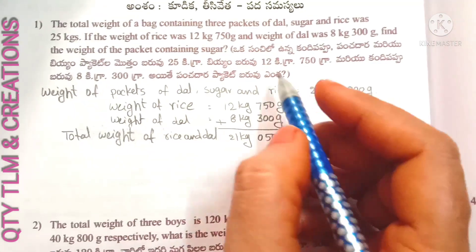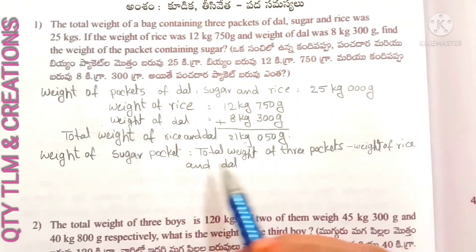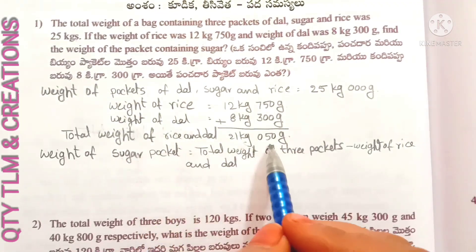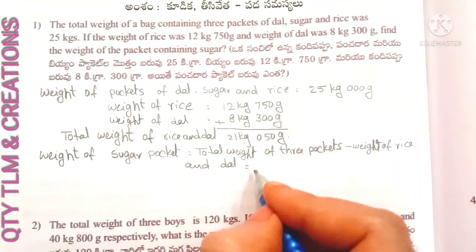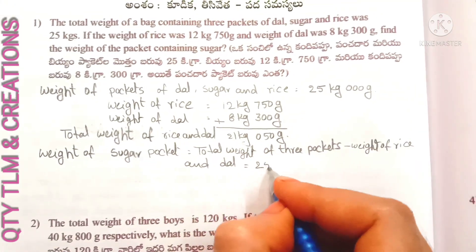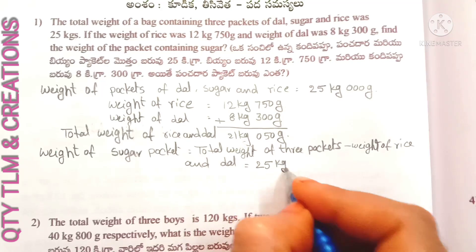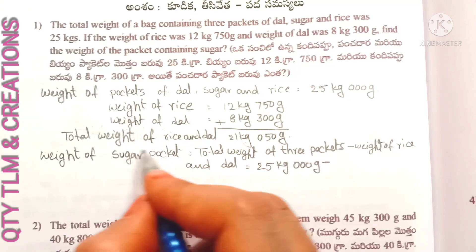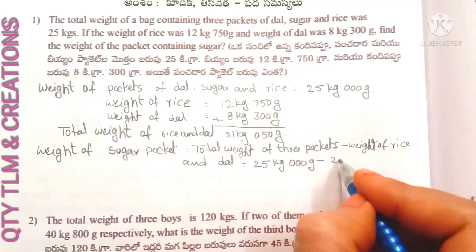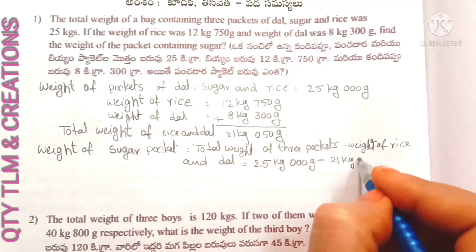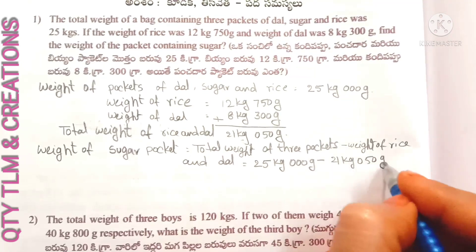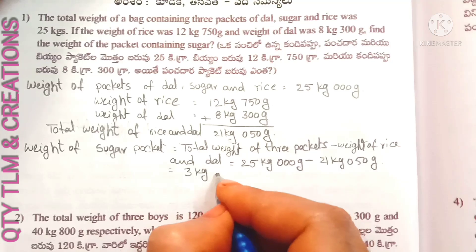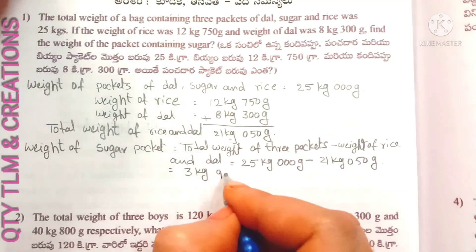Weight of sugar packet equals total weight of 3 packets minus weight of rice and dal. Total weight of 3 packets is 25 kilograms 0 grams, minus total weight of rice and dal which is 21 kilograms 50 grams. Therefore, weight of sugar equals 3 kilograms 950 grams.